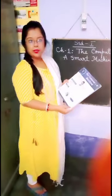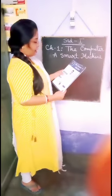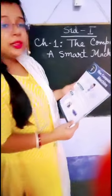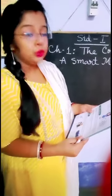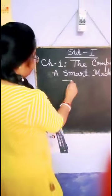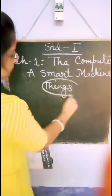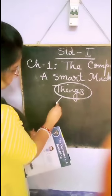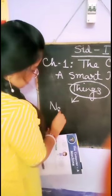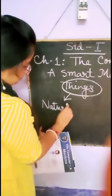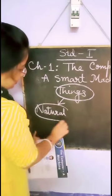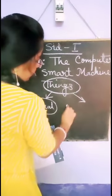Page Number 7: Things Around Us. All things are divided into two groups. First is the natural things and the second is the manmade things.